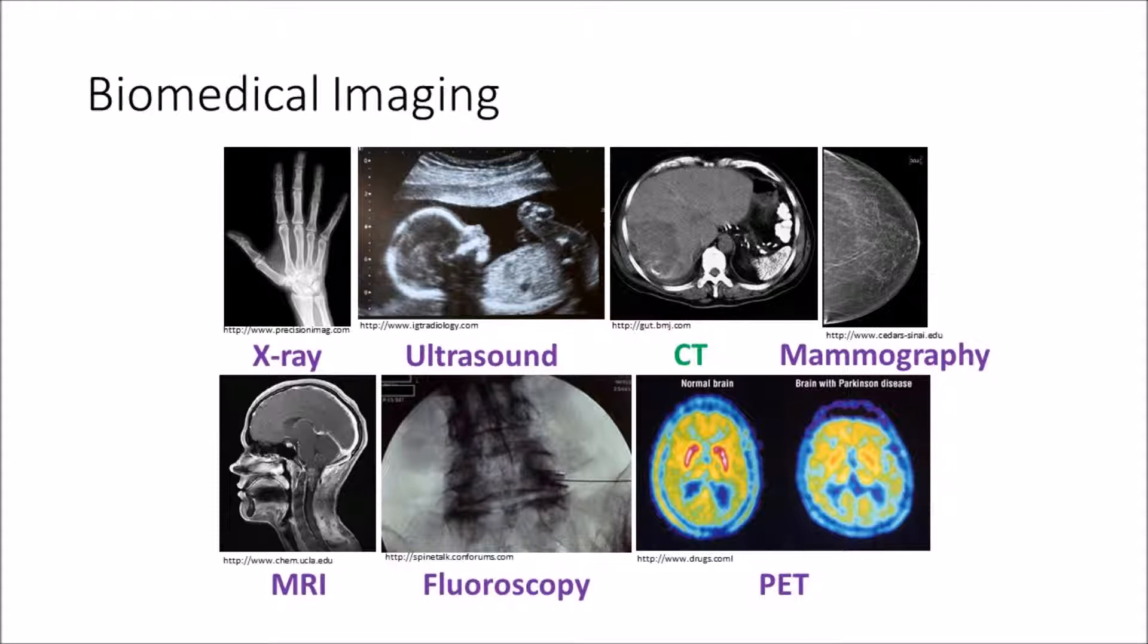Computerized tomography uses an X-ray apparatus to create a set of scans or detailed pictures of areas inside the object that is imaging.